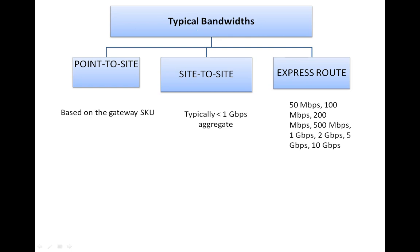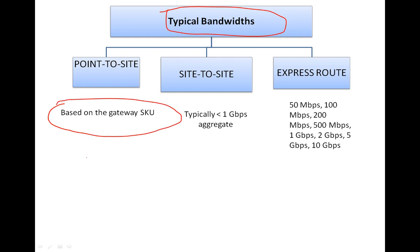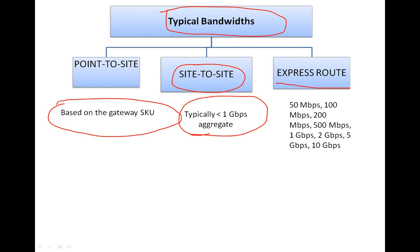Next, let's talk about bandwidth. For Point-to-Site, the bandwidth is based on the gateway SKU — I'll explain SKU in a separate video. For Site-to-Site, it is typically up to 1 Gbps aggregate. For ExpressRoute, the supported bandwidths are 50 Mbps, 100 Mbps, 200 Mbps, 500 Mbps, 1 Gbps, 2 Gbps, 5 Gbps, and 10 Gbps.